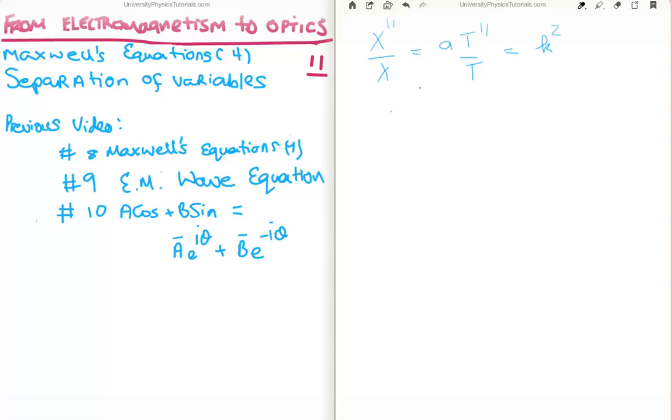So this is now our two separated equations. So we have the following. We have capital X double prime is equal to capital X times k squared. And we have capital A times t double prime, or excuse me, small a times capital T double prime, is equal to capital T times k squared.